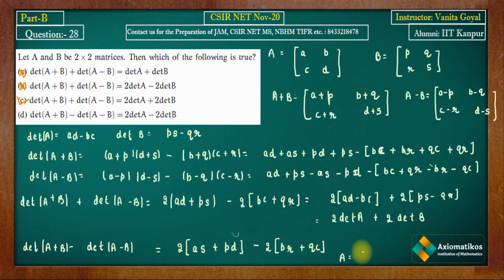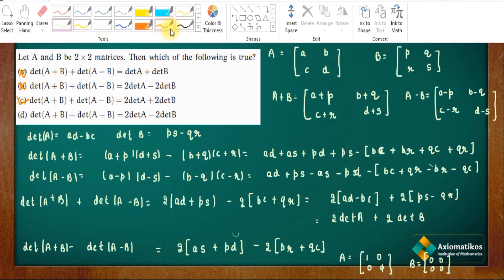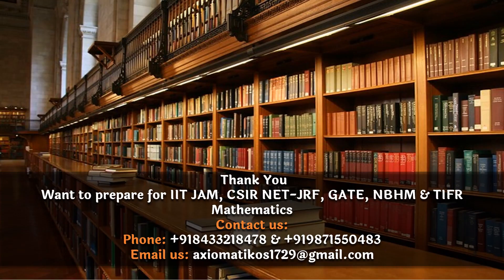As a counterexample: let A = identity matrix [1,0;0,1] and B = zero matrix [0,0;0,0]. Then A+B = A and A−B = A, so det(A+B) − det(A−B) = 0. But the right-hand side, 2·det(A) − 2·det(B) = 2×1 − 2×0 = 2. Since 0 ≠ 2, Option D is false. This confirms that only Option C is correct.